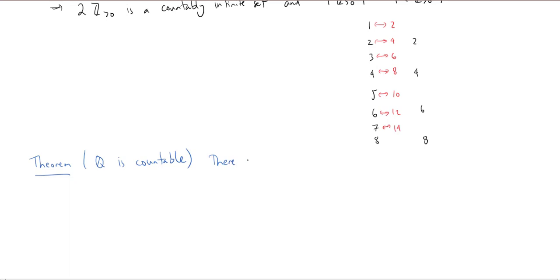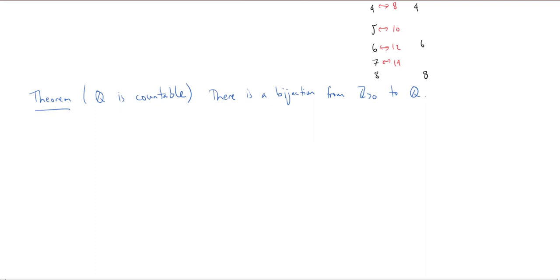Unpacking this definition: there is a bijection from the set of positive integers to Q. Before I prove this, I want to show you the classic way of understanding why this could be true. It seems unbelievable because even if you just look between one and two, there are an infinite number of rational numbers between one and two. So how are you going to build this bijection — how would you count all of the rational numbers?